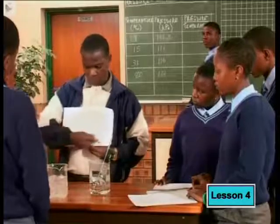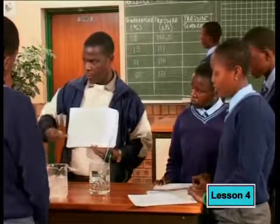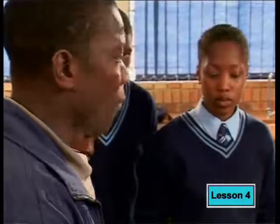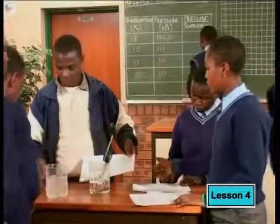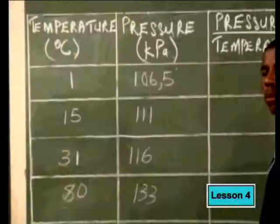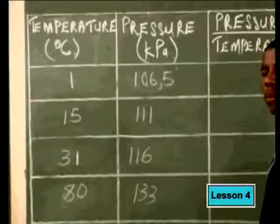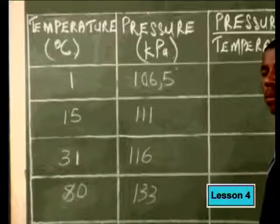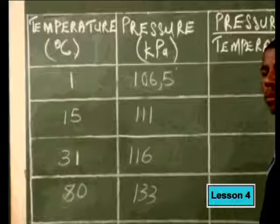Your temperature would be along the x-axis and your pressure along the y-axis. Go back into your groups and plot the graphs according to the information we got from the experiments. As the learners try to plot their graphs, why don't you use the same data and plot a graph of your own? Remember, when plotting graphs, finding the right scale is half the battle.